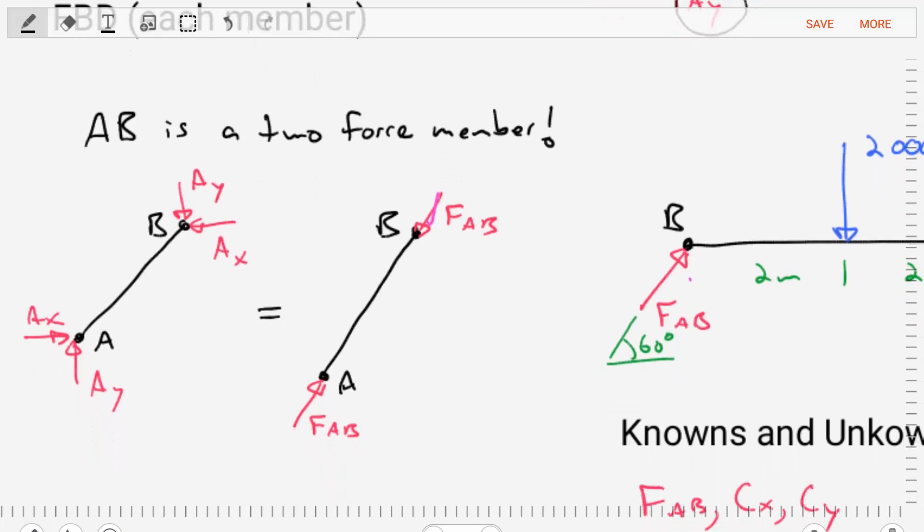So if we do, we can recognize that member AB is actually a two-force member, where the AX and the AY that we had must be equal and opposite on the other end. And if it is a two-force member, two forces are transmitted through it, then those forces, their reaction,